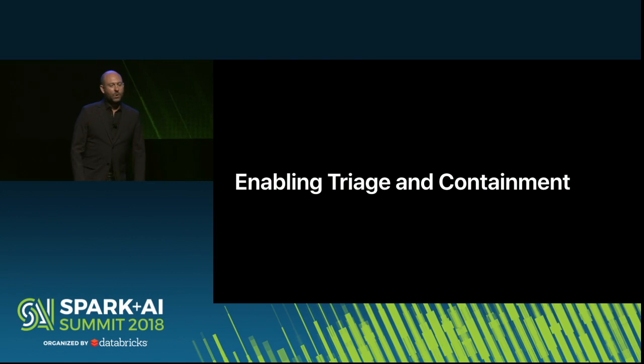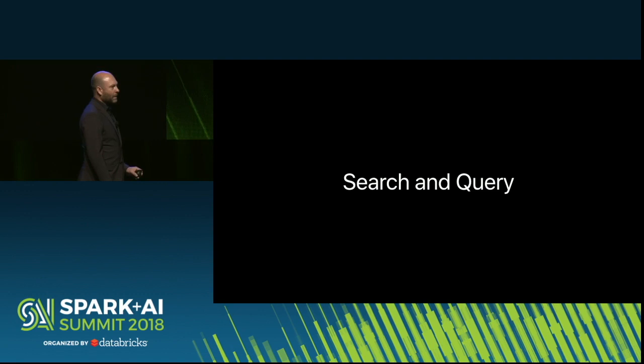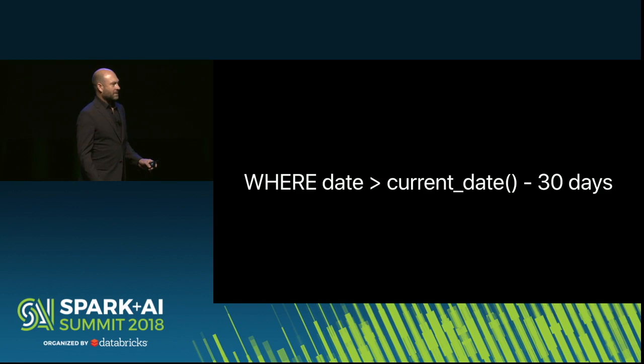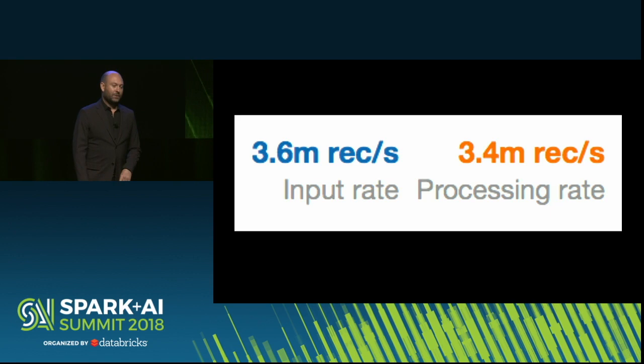The other side of this is after we detect, we actually have to triage that detection, and we have to do containment if it's a true positive. This really comes down to search and query, whether it's ad hoc by people or whether it's part of an automated workflow. I separate search and query as: search is looking for particular events by some attribute of the event, and query is things like relations and aggregations. Our users like to do both of these things over really long time windows, and at our scale that can be a lot of data.